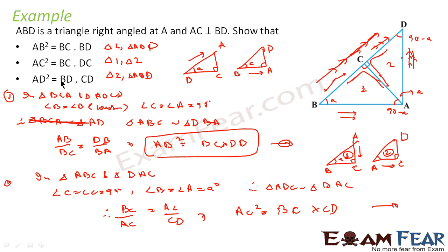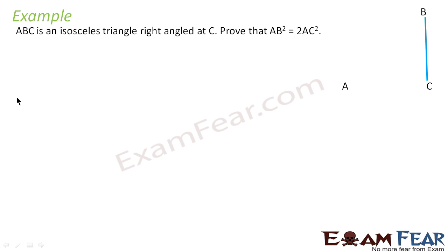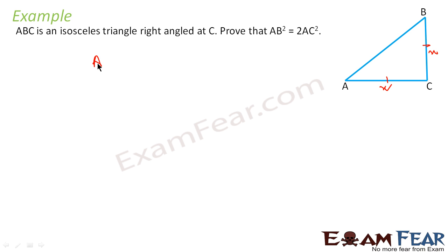Similarly, for the third case, you have to prove that triangle 2 and triangle ABD are similar. Once they are similar, compare the side which has AD and get the answer. Let's take one more example. This is triangle ABC — an isosceles triangle with right angle at C. We have to prove that AB² equals 2AC². It is very simple. It is given that AC equals BC — both sides are equal.